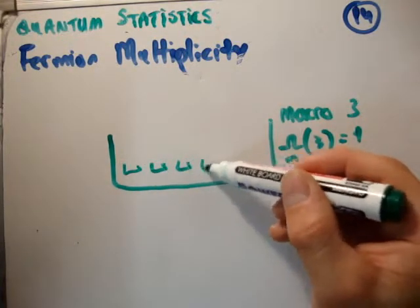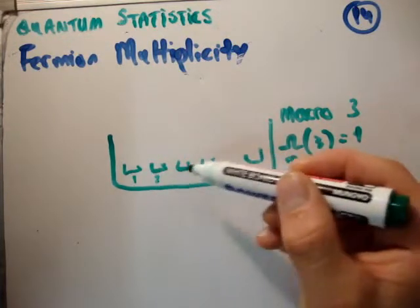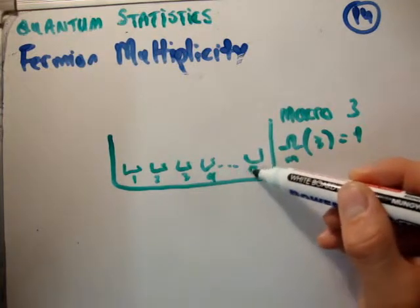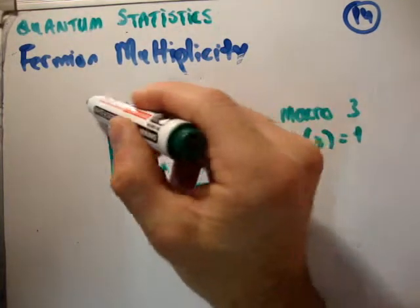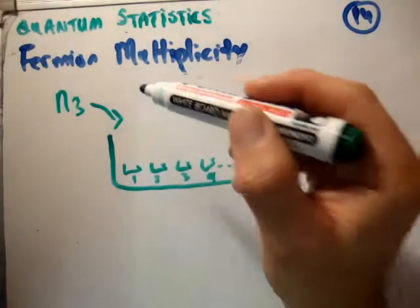So, inside it, we have g_3 microstates. Okay. So, there's the first one, the second one, the third one, the fourth one, and the g third one. And into it, we're going to put in n_3 particles.